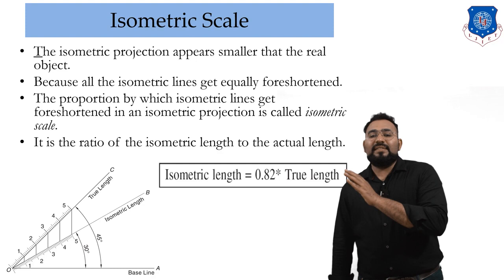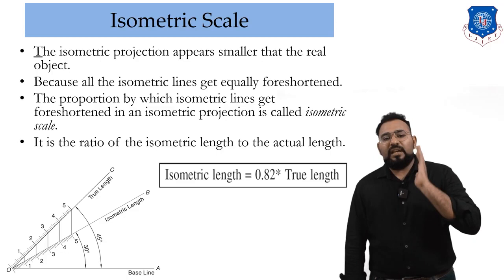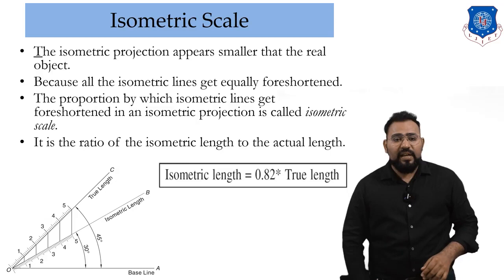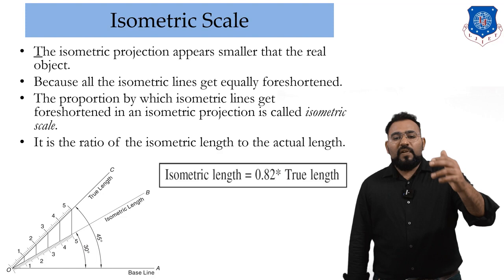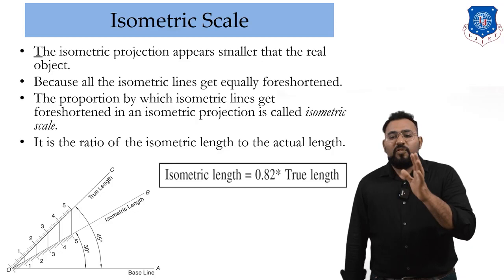Isometric projection appears smaller than the real object because all isometric lines get foreshortened equally. The proportion by which isometric lines get foreshortened in an isometric projection is called the isometric scale.